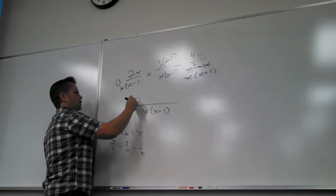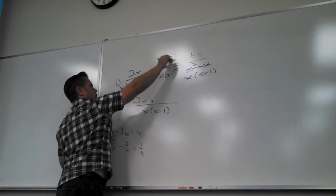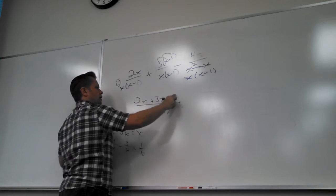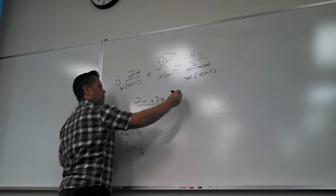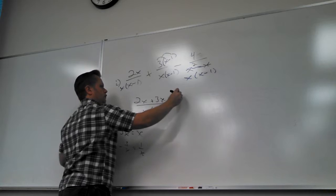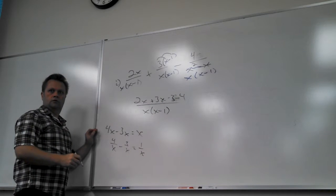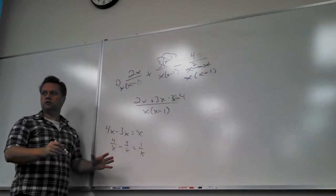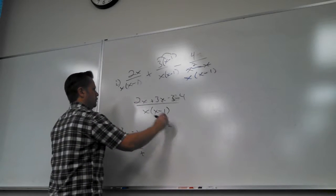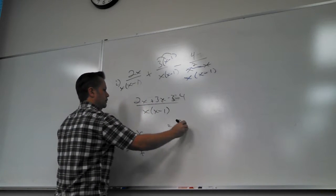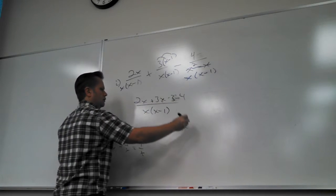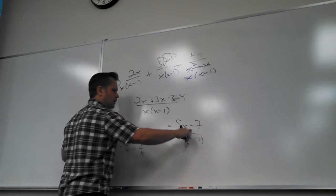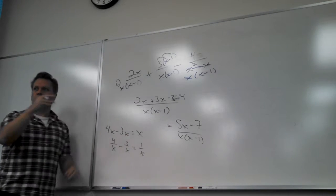So what do I get on the top? Two X plus three X minus three minus four. That equals five X minus seven. Can you go any further? No, because the top can't be factored.